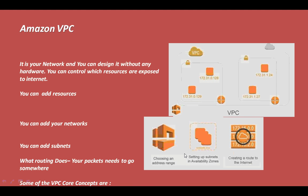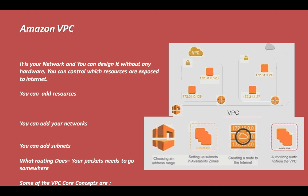The third core concept is defining routes. Once subnets and availability zones are defined, you want resources to communicate across different subnets and networks — that is done by routing. Once routing is done, you need to authorize traffic: for example, whether an instance from one subnet should communicate to all instances of another subnet or only to a single instance. All this can be done by authorizing traffic or creating security groups and network access control lists.